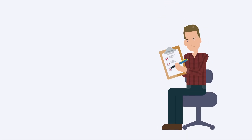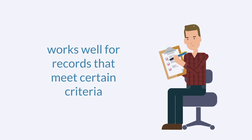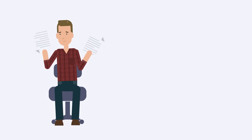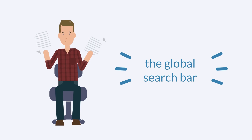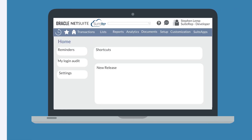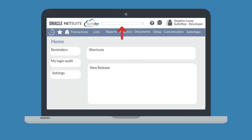Searching for records from a list is especially helpful if you're looking for a group of records that meet a certain criteria rather than one specific record. If you're looking for that one very specific record, then using the global search bar might be your best bet. The global search bar, located top and center in NetSuite, allows you to search for anything in NetSuite. Your search can be as broad or as specific as you need it to be.